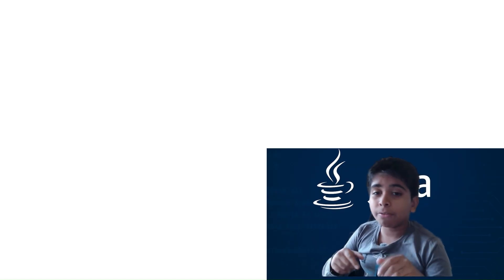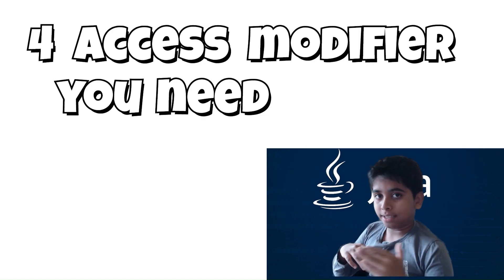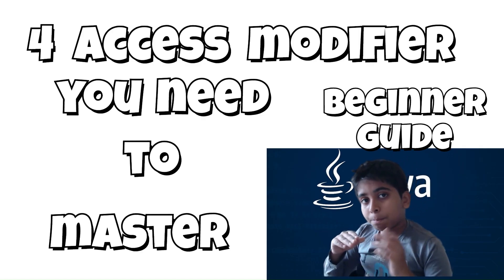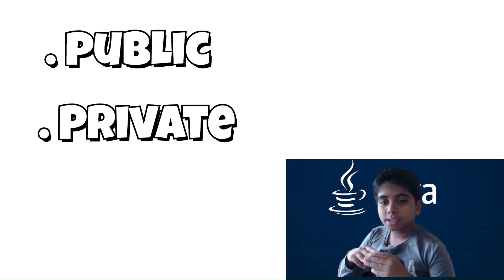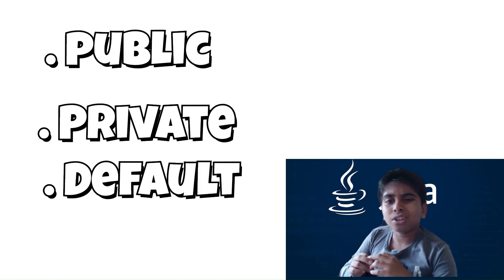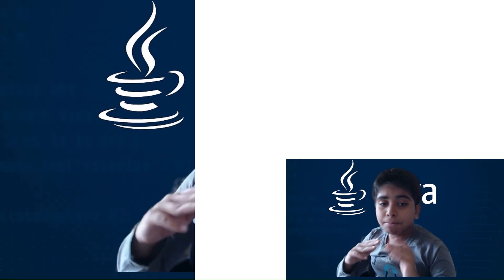In Java, there are four access modifiers you need to master: public, private, default (also called package-private), and protected. To make this easy, I will explain each one with simple analogies and real code examples, so you can view your program as a house with different rooms.